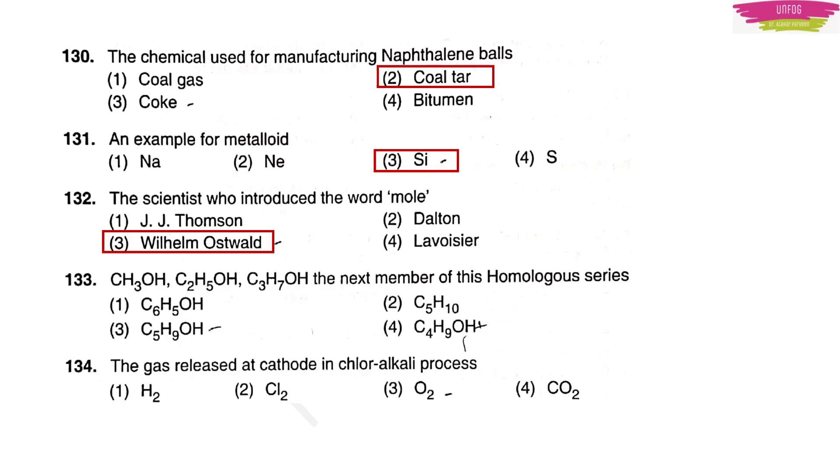Question number 133. CH3OH, C2H5OH, C3H7OH. The next member of the homologous series. Of course, it should be C4H9OH because see the series CH3OH, C2H5OH, C3H7OH. If you see the series, next should be C4H9 only. It should be CNH2N plus 1OH. They are talking about alcohol here. I think this also we have shown in the revision class. This I was talking about homologous series of alcohol. This is the series I have given you for your reference.